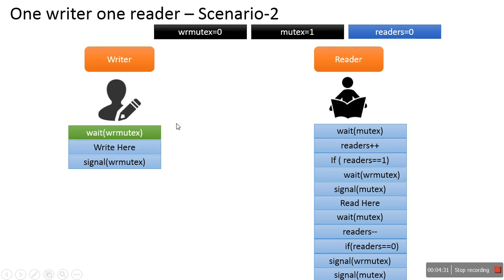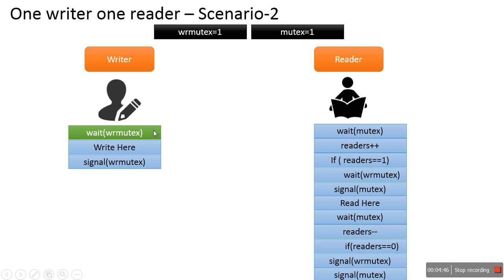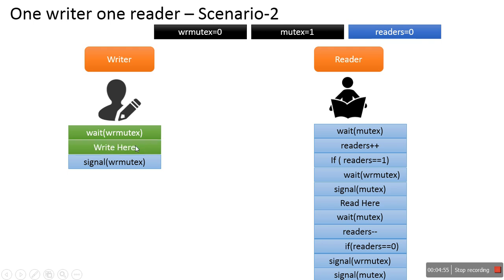The writer starts executing its code before the reader. The writer calls wait(wr_mutex), which decreases the value and checks if it is less than 0 — if not, it continues. The writer then executes its next instruction and starts writing data to the file. At the same time, a reader arrives and wants to read the same file.